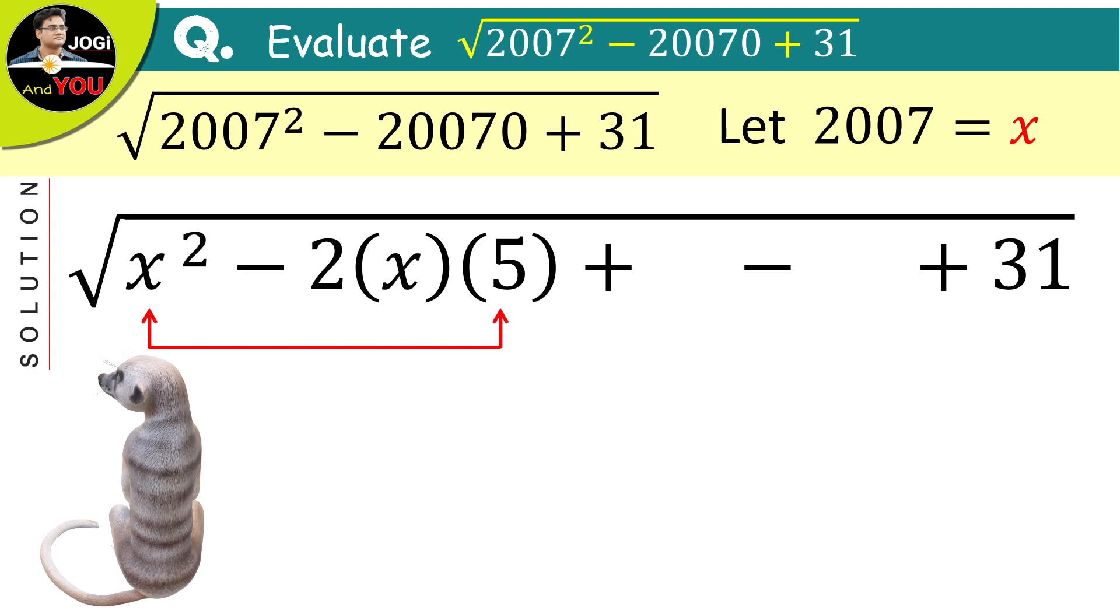After saying this, a basic algebraic identity is remembered which is a square minus 2ab plus b square is equal to a minus b the whole square.